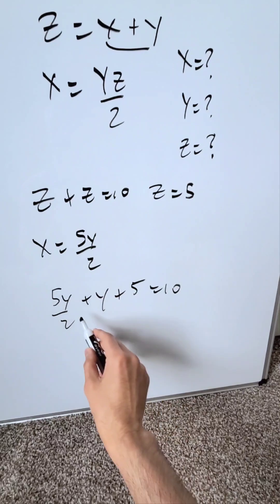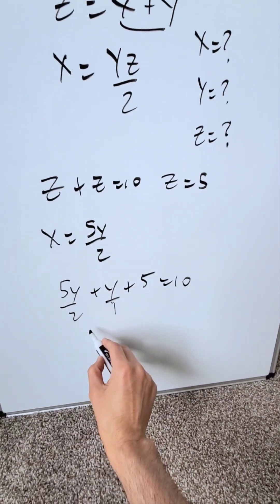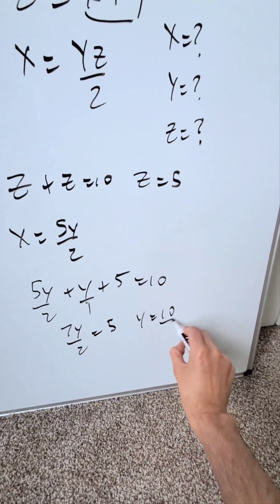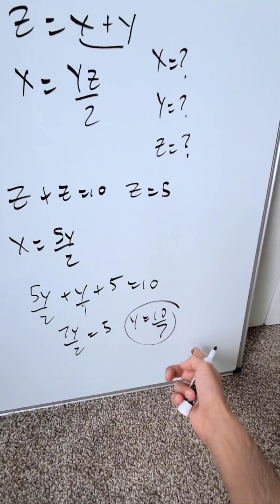You push this 5 to the other side, and you do fraction algebra. You're looking here at 7y over 2 is equal to 5, and y is equal to 10 over 7. We have y solved.